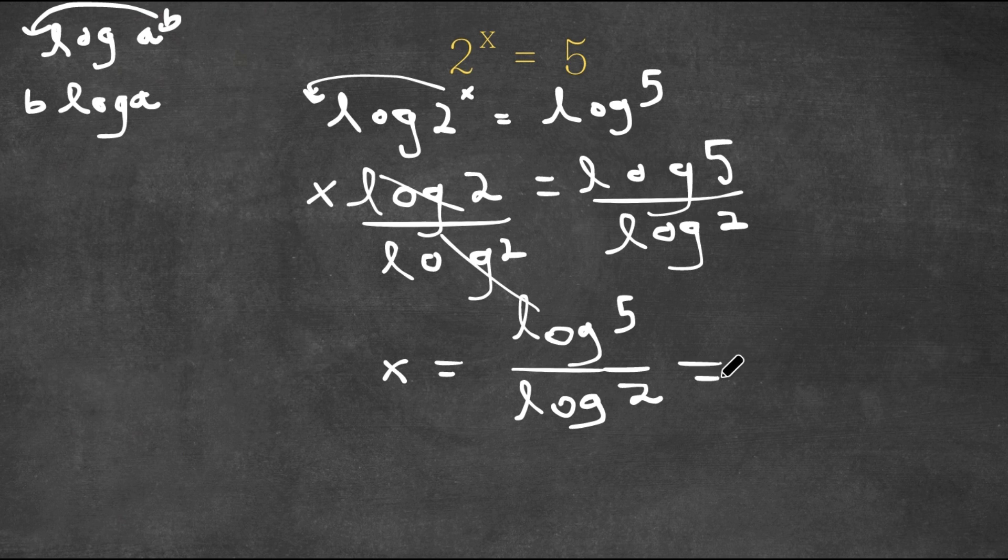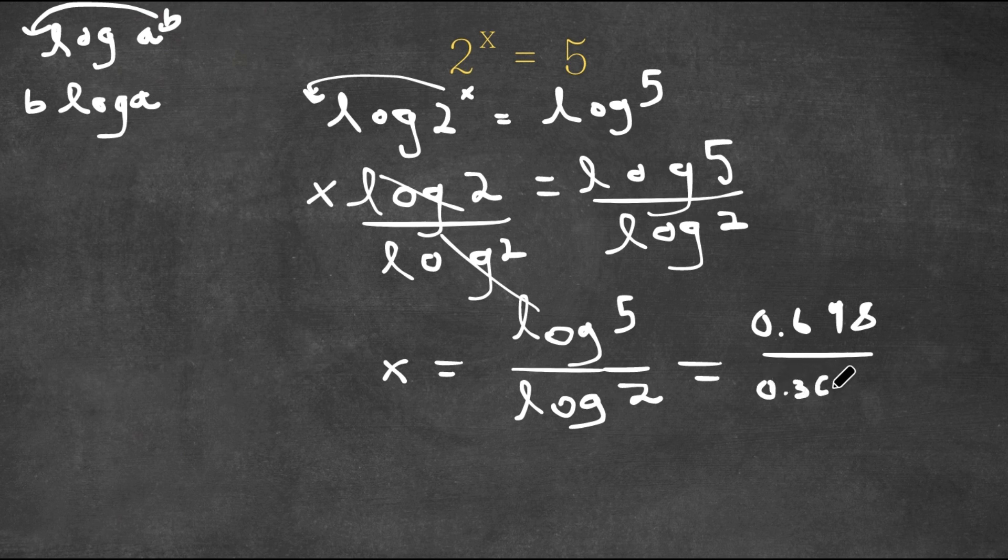And this is equal to, log 5 is approximately 0.698. So log 5 over log 2 is approximately equal to 2.32.